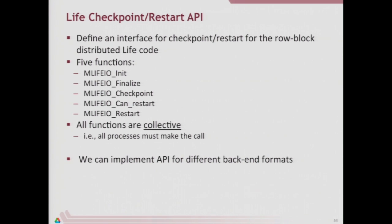We're going to implement three different versions of this. Imagine you're tired of spaghetti I/O code in your application — you want to build a little interface for interacting with the storage system in your code. You want to stick with that interface even if you decide to change how you map your data model down onto storage later. So we've said we're going to have these five functions for interacting with the storage system in this Game of Life code. This defines the way we'll interact with storage.